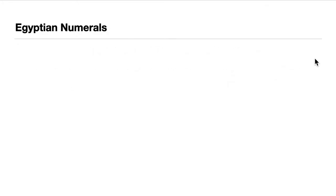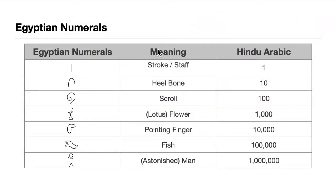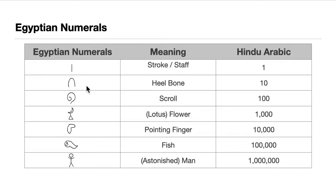Let's look at examples of how Egyptians write their numerals. First, we have the stroke, or staff — similar to the Roman numeral I — and its value in the Hindu-Arabic or decimal system is 1. Second is the heel bone: if you look at your heel and turn it upside down, that's the heel bone symbol, and its value is 10.